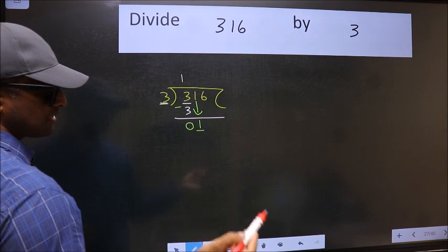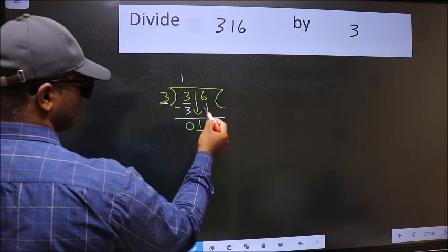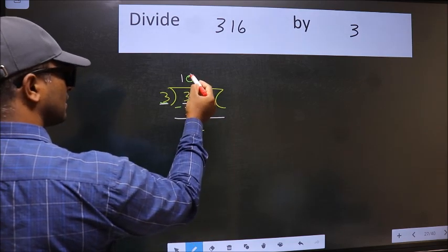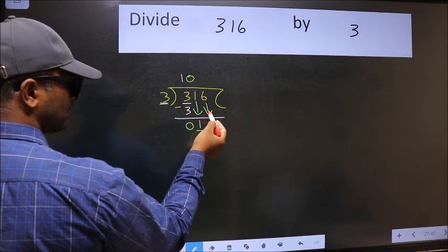So we should bring down the second number. And the rule to bring down the second number is we should put 0 here. Then only we can bring down this number.